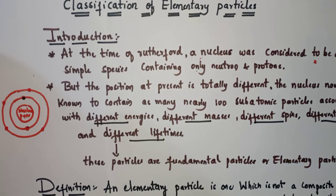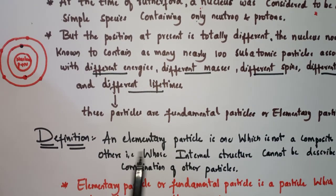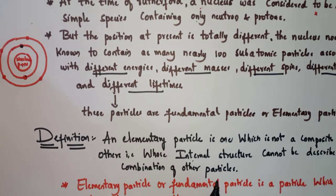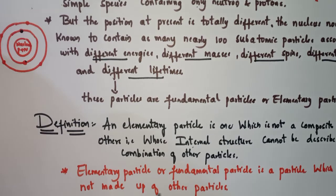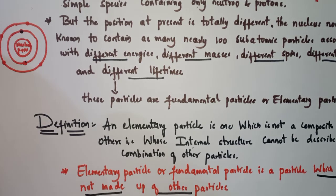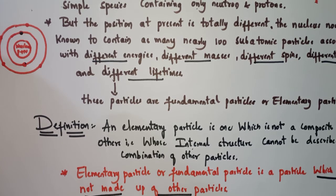These particles are called fundamental particles or elementary particles. An elementary particle is one which is not a composite of others — that is, whose internal structure cannot be described as a combination of other particles. In simple terms, an elementary particle is a particle which is not made up of other particles.